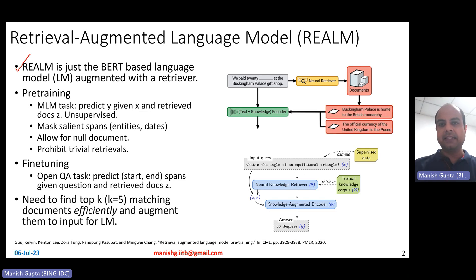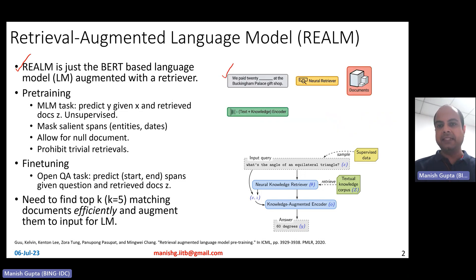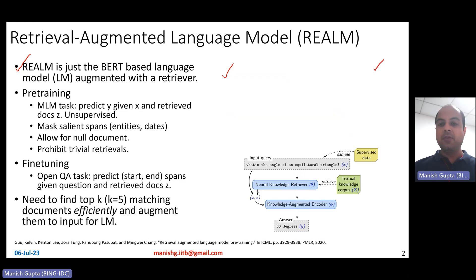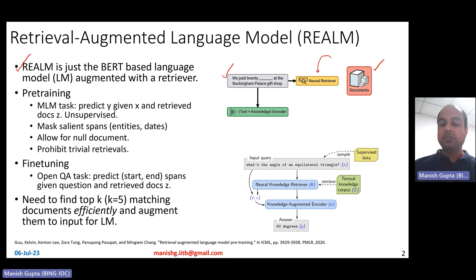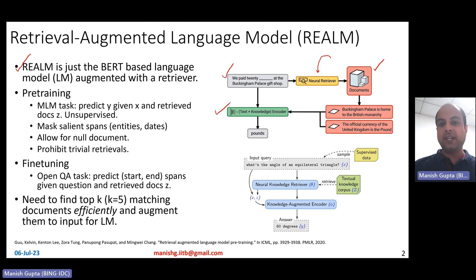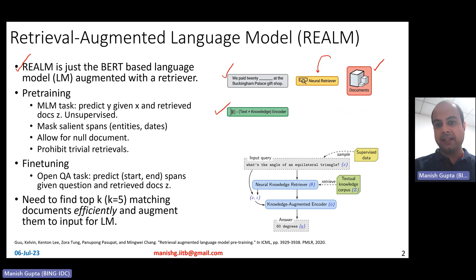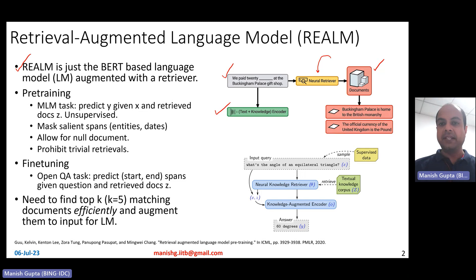Let's consider this particular simple task. Let's say if I want to figure out: we paid 20 [MASK] at the Buckingham Palace gift shop. Typical masked language modeling says I'll try to guess what it is. But if you had access to a Wikipedia corpus, what you could do is basically learn a neural retriever which goes to the Wikipedia corpus, figures out relevant documents, and those relevant documents are also fed to our BERT model so as to make a good guess of what could be filled in this blank. The BERT model rightly predicts 'pounds' there, and that's basically retrieval augmented masked language modeling.